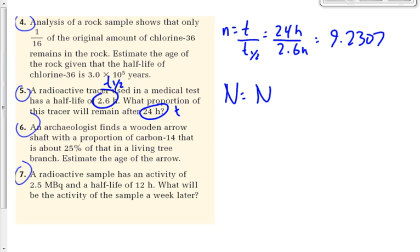We use N equals N₀ times (1/2)^n. You can make N₀ equal to 1, or you can make it 100 — it depends on whether you want the answer in decimal form or percent form. Personally, I like the percent approach, so I'll make N₀ equal to 100.